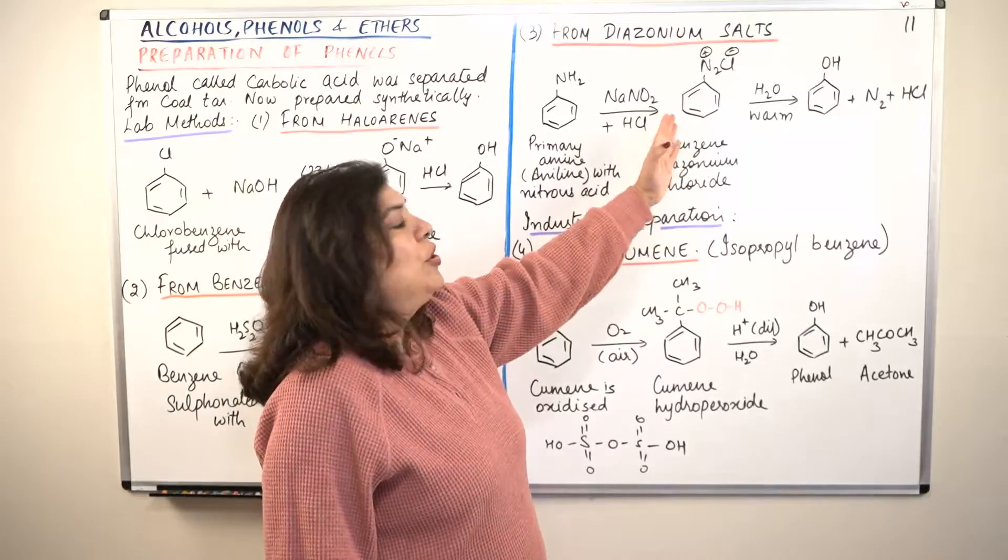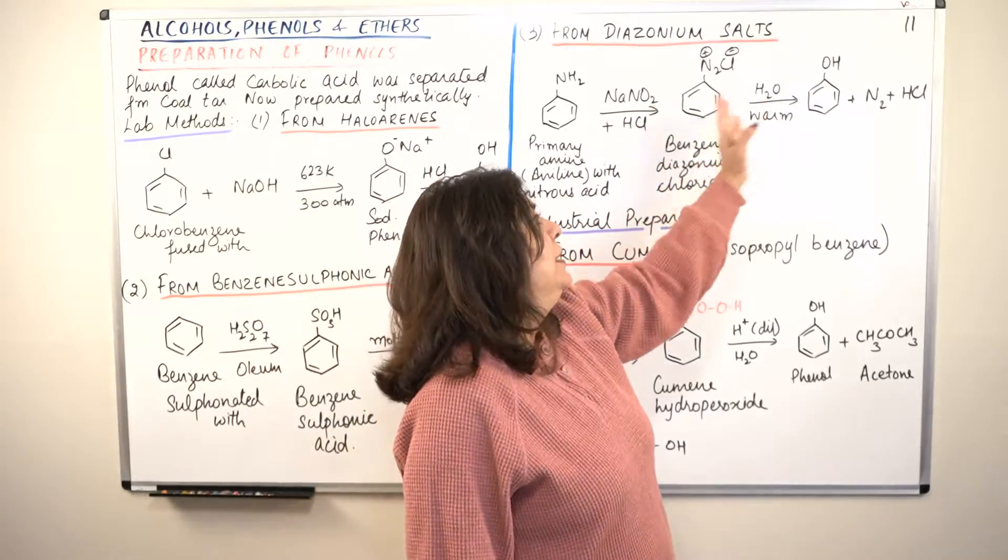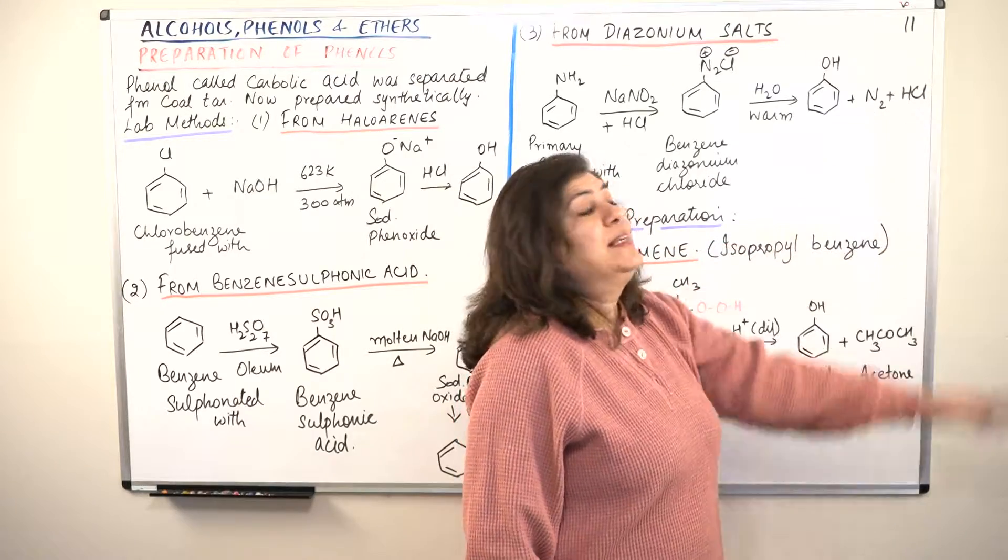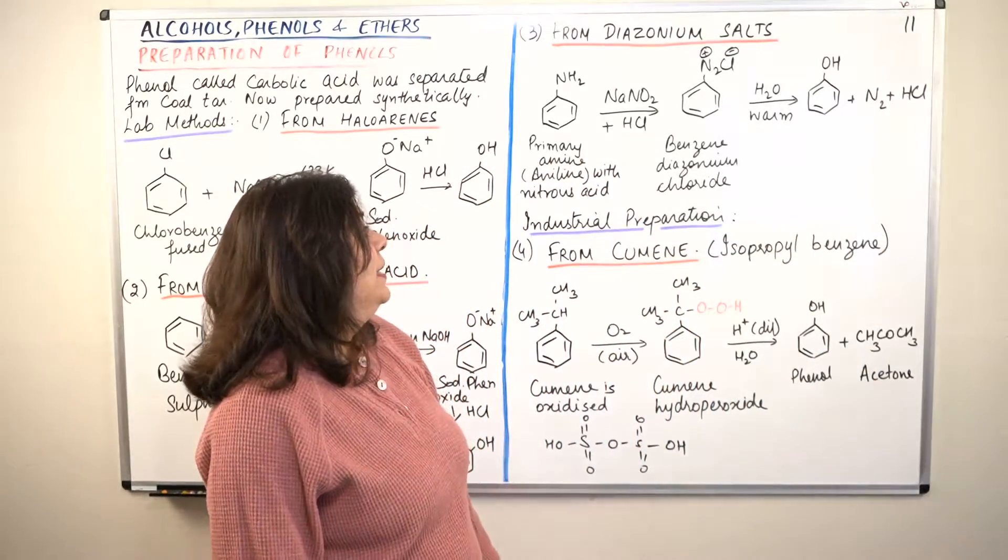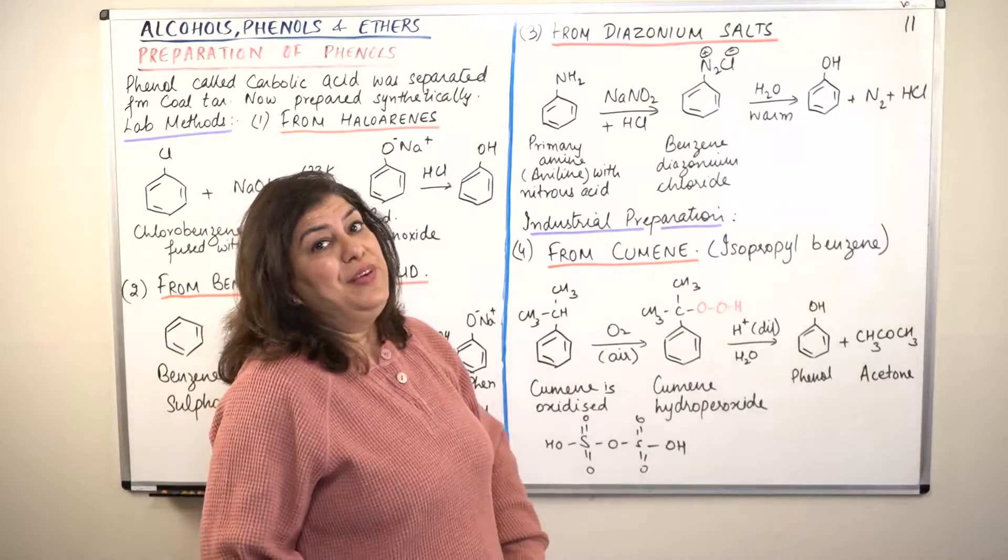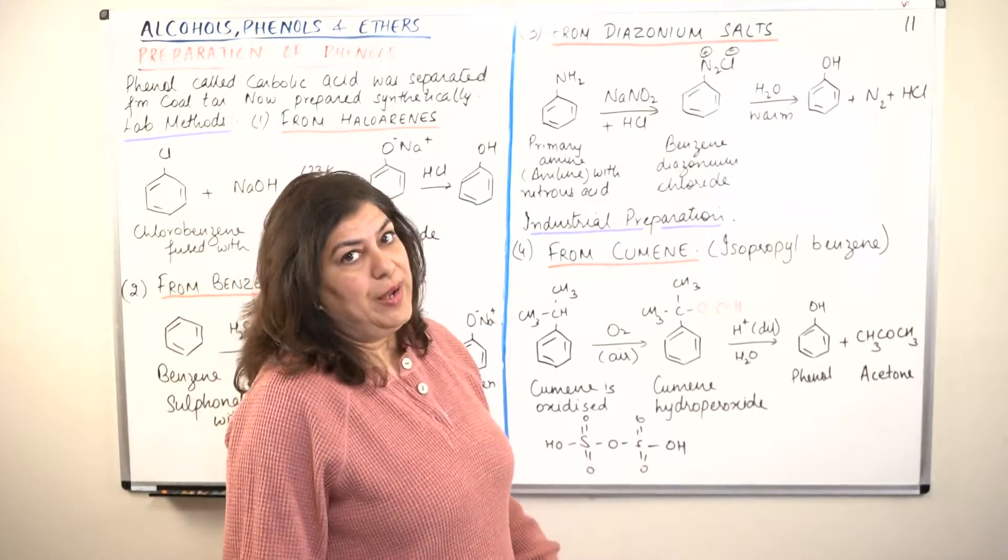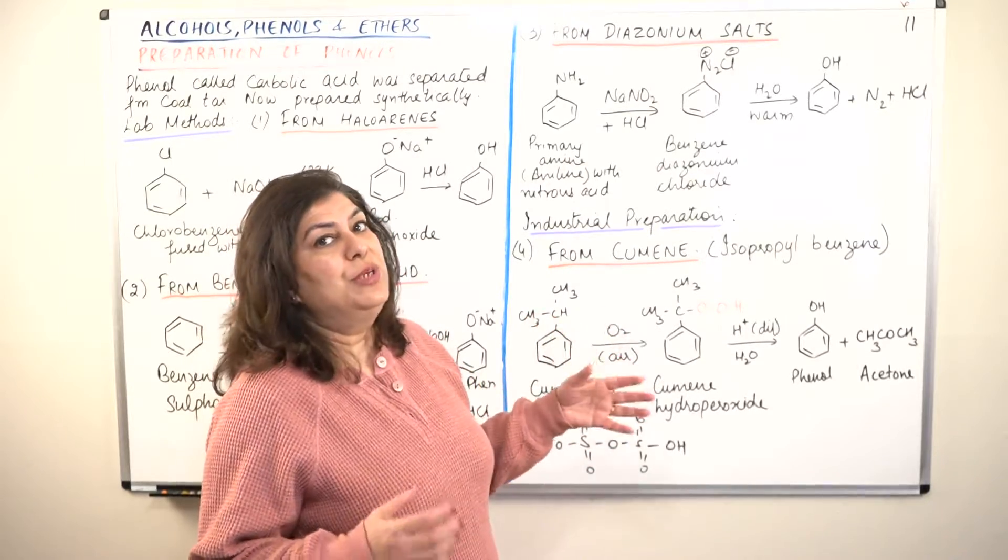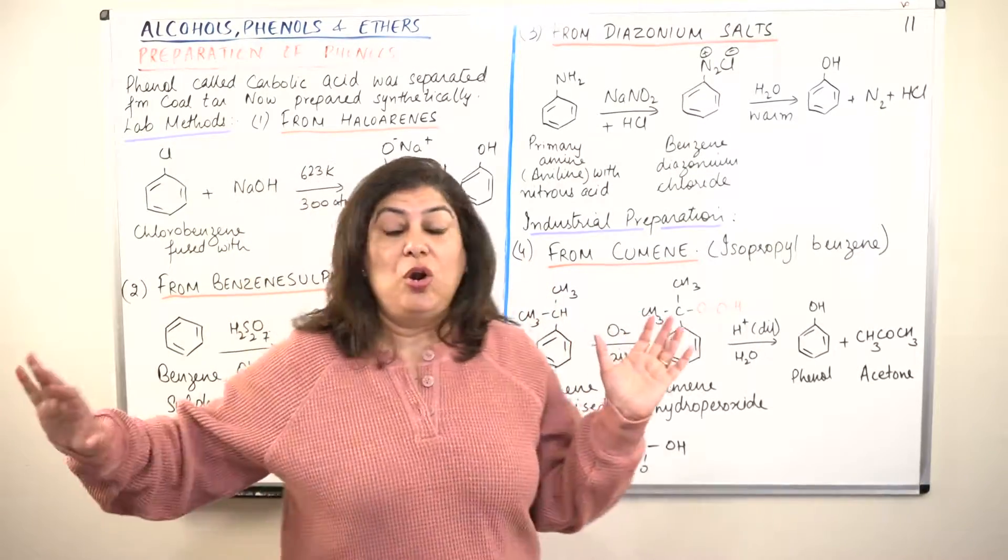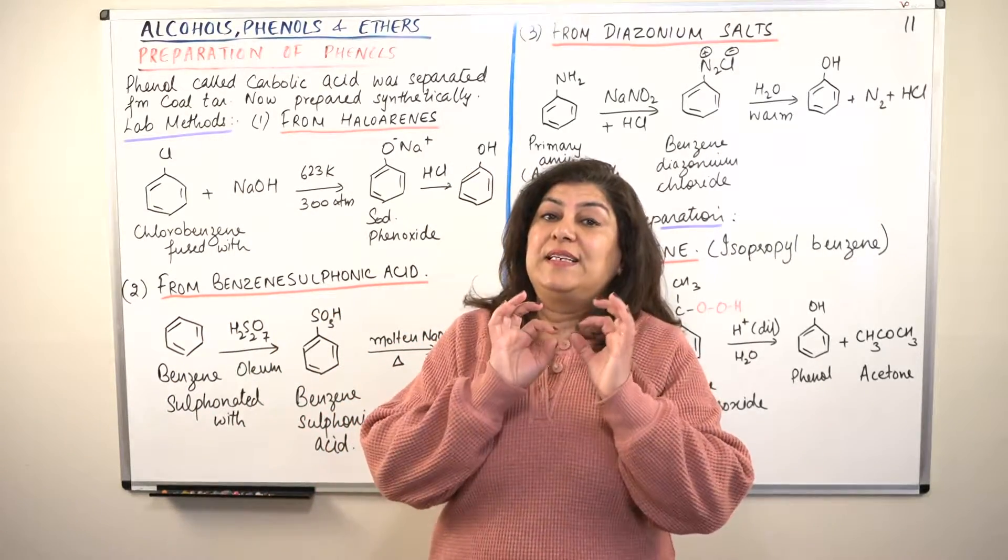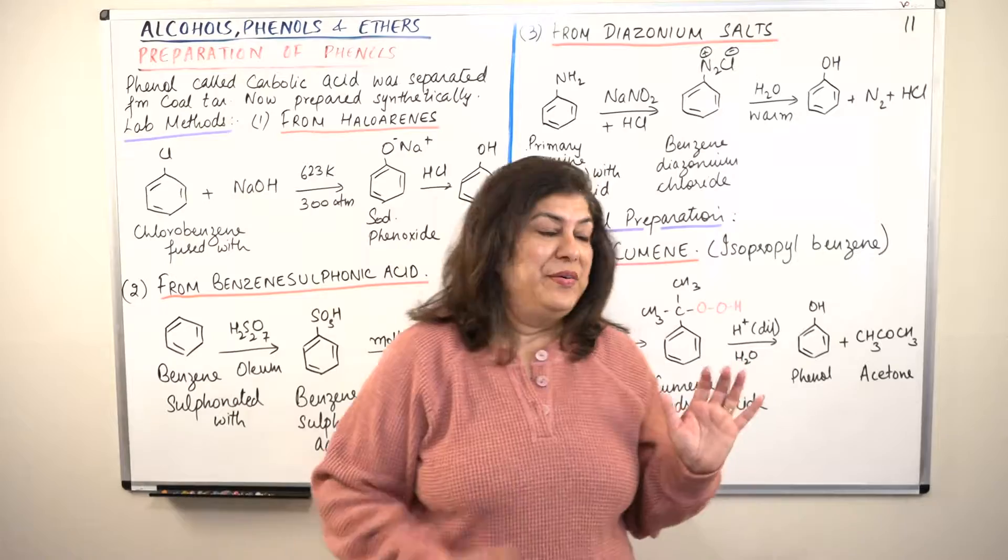When the diazonium salt is heated with water, it gives us phenol - it gives us nitrogen and hydrochloric acid is given out. So you can prepare phenol from benzene diazonium chloride or from diazonium salts of benzene because they all have to be derivatives of benzene, since phenol has the OH group attached to a benzene ring.